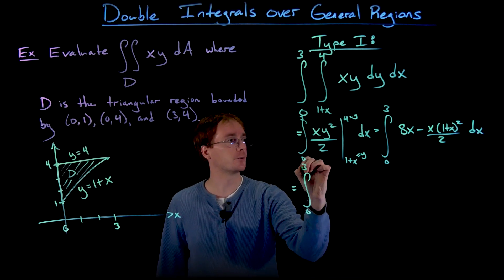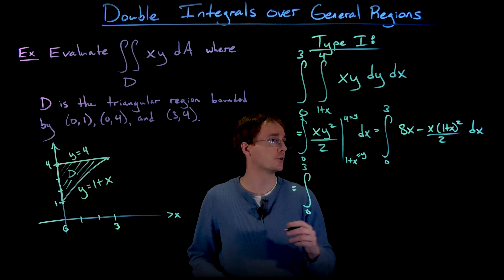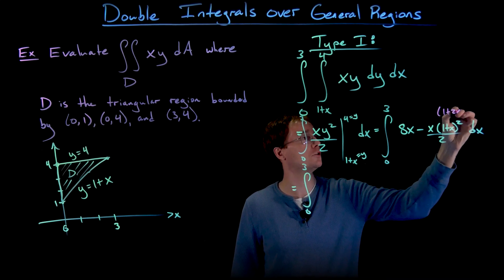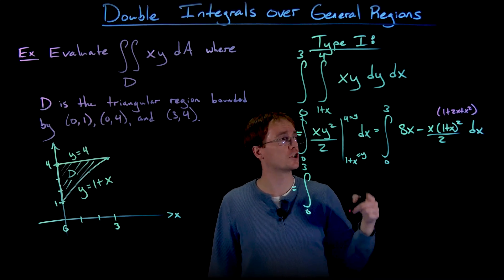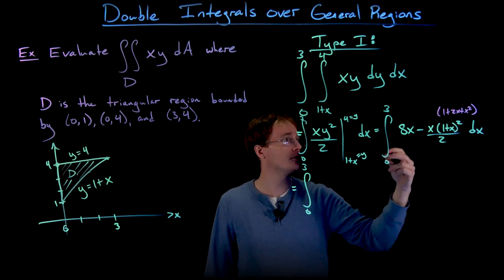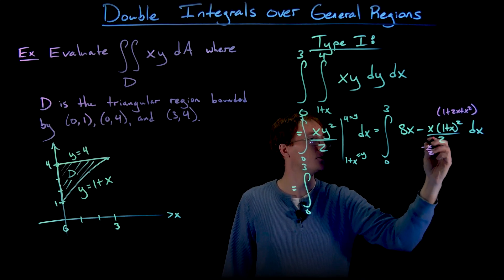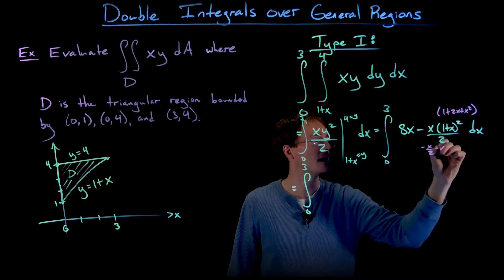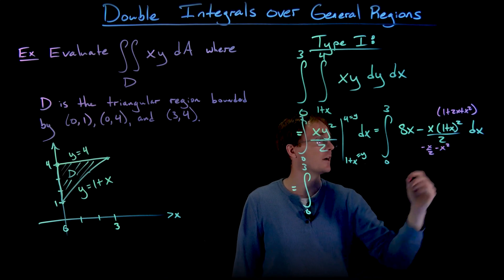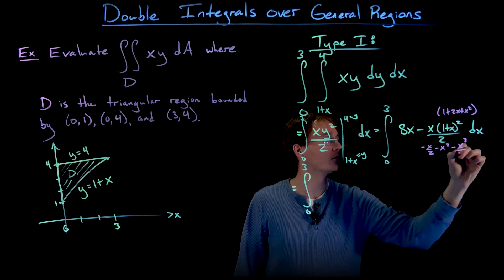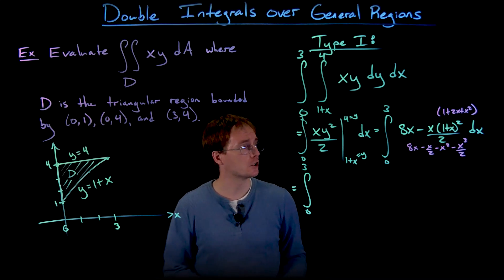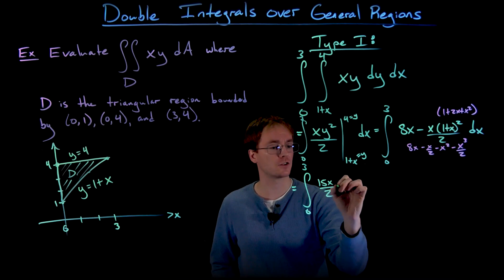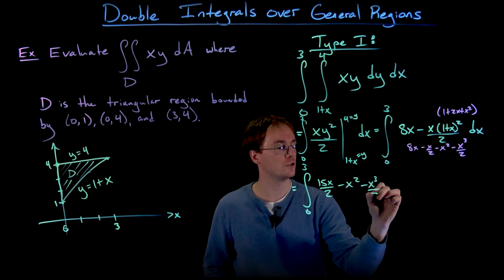We still have the integral from 0 to 3. The 8x term is fine. Expanding (1+x) squared gives 1 + 2x + x squared. Multiplying through by negative x over 2, we get: negative x over 2, then negative x squared, then negative x cubed over 2. Combining like terms: 8x minus x over 2 equals 15x over 2. So the integrand simplifies to 15x/2 minus x squared minus x cubed over 2.